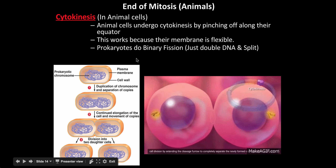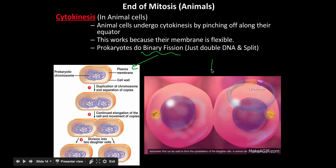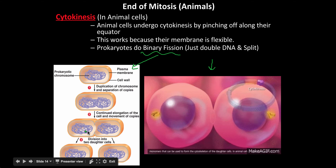Prokaryotes do binary fission, which is a simpler process. Mitosis has all those earlier steps — prophase, metaphase, anaphase, telophase — that prokaryotic cells don't do. In binary fission, the DNA in the prokaryote gets longer, the DNA is doubled, it gets distributed to both sides, and the cell splits. They just double and split, with less process because they don't form those complex chromosomal structures.